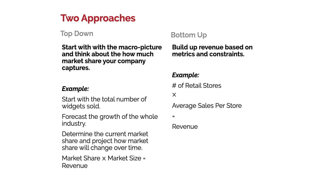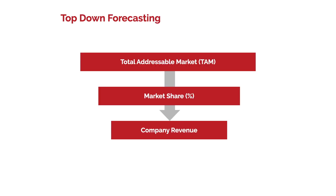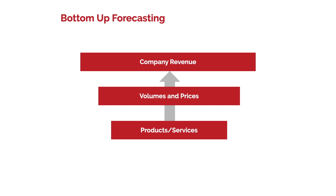The other approach is bottom-up: build revenue based on metrics and constraints. For a retail company like Costco or Walmart, you might say they're adding 100 stores next year and 200 the year after, then look at average sales per store — and that gives you your revenue. So top-down forecasting looks at the total addressable market (TAM), determines market share, and derives company revenue; whereas bottom-up forecasting looks at products and services, figures out volume times price, and arrives at revenue that way.